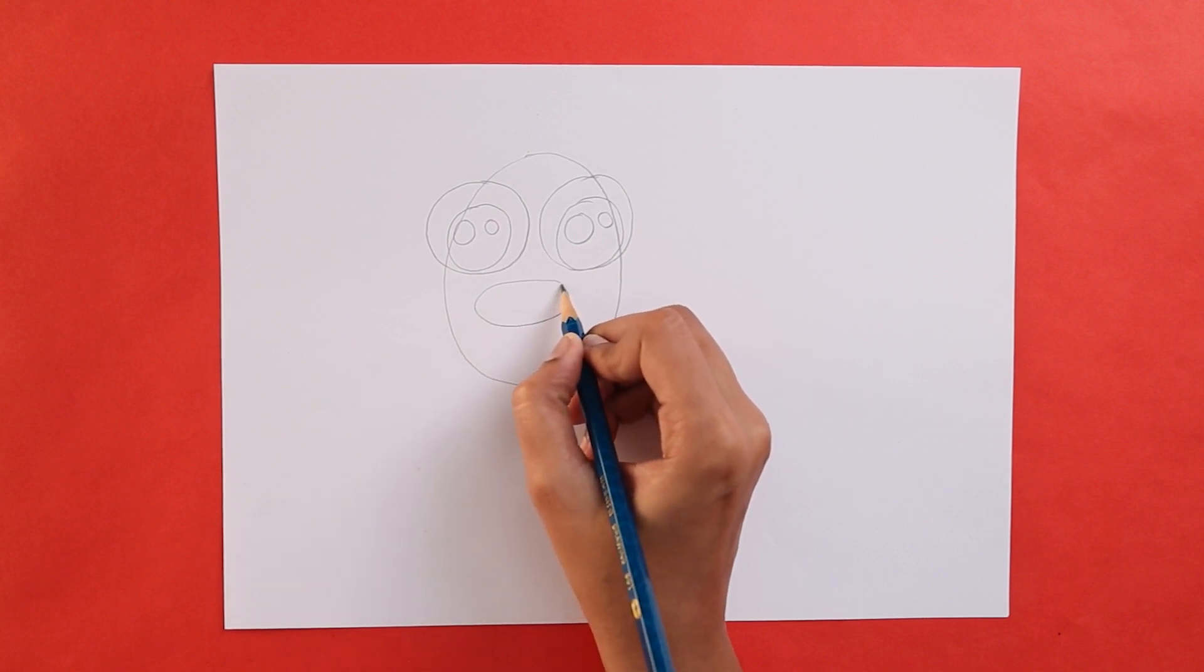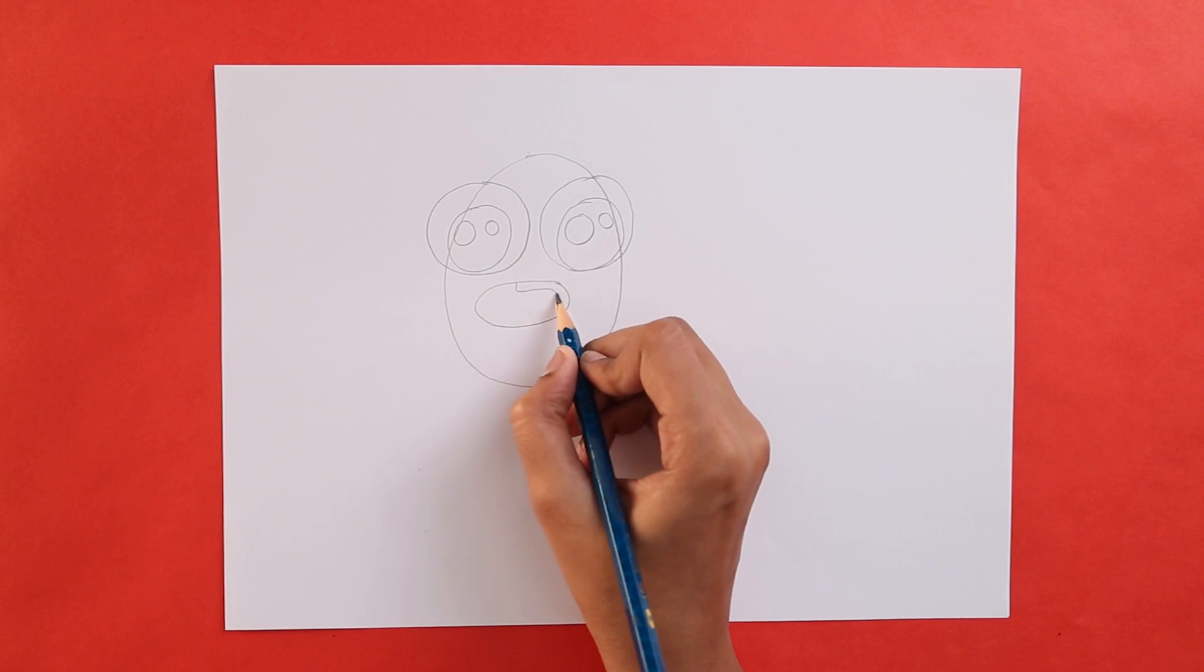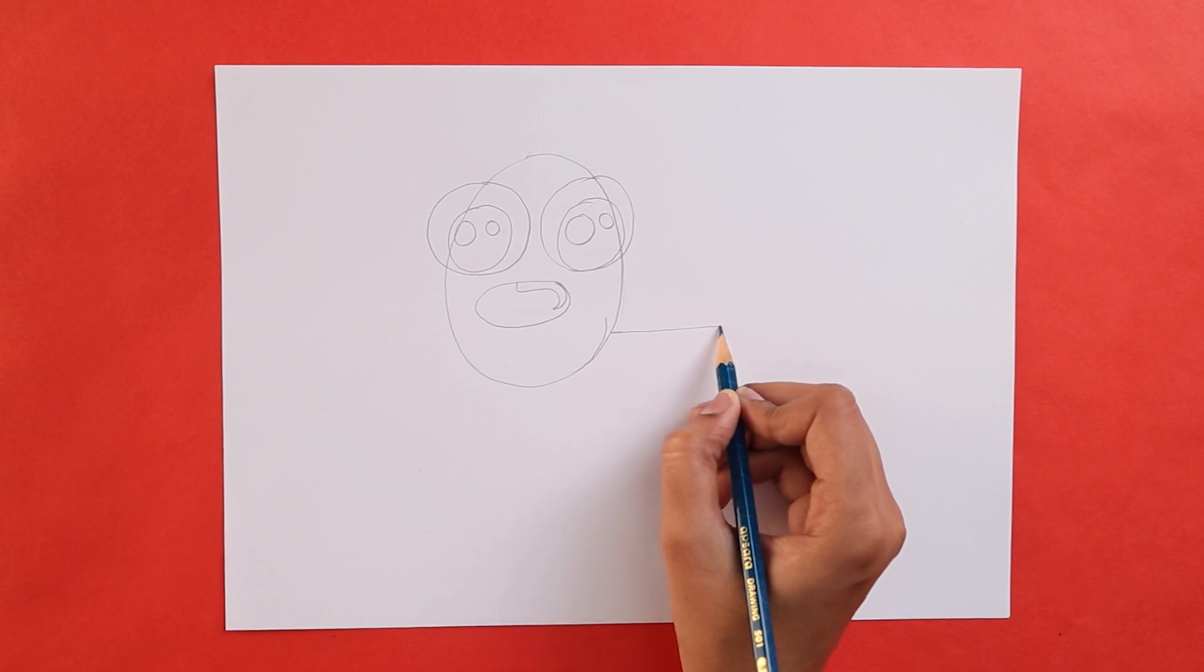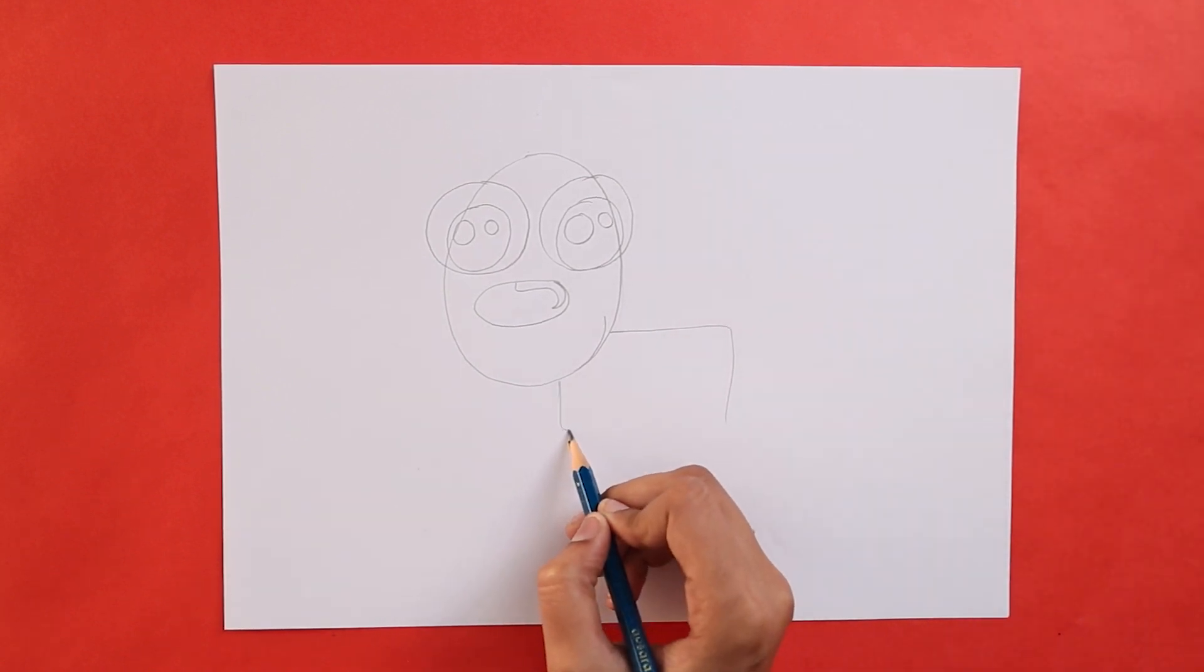Now for the nose. Now it's time to draw the body. You can start off by drawing a small rectangle like this.